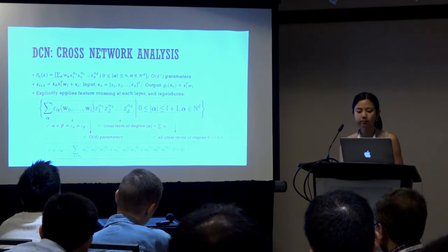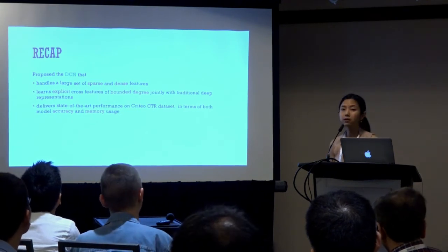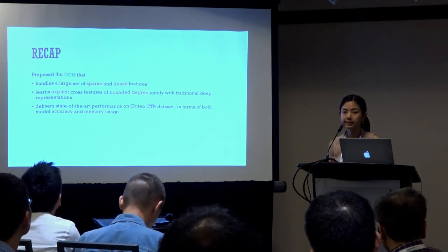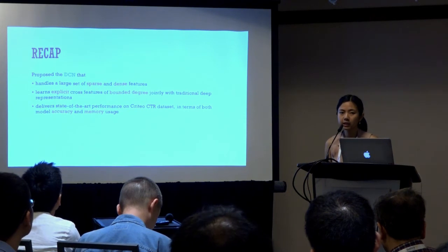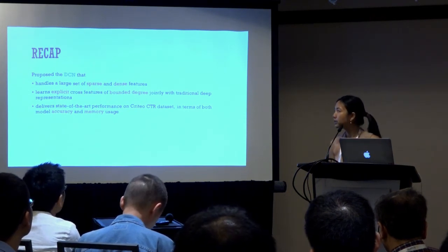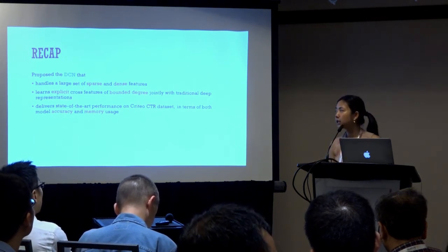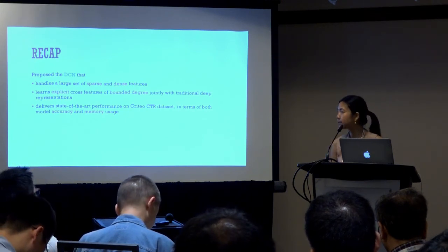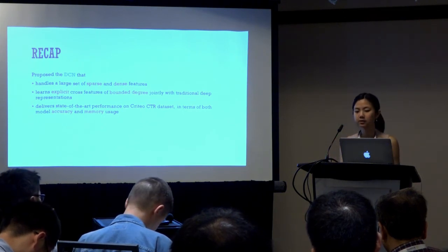Let's recap what we discussed today. We propose the deep and cross-network, DCN, that handles a large set of sparse and dense features thanks to the embedding and stacking layer. It also provides explicit cross-features of bounded degree because of the cross-network, jointly with traditional deep representations from the deep network. Experimentally, we show that it delivers state-of-the-art performance on CTR datasets in terms of both model accuracy and memory usage. Thank you.